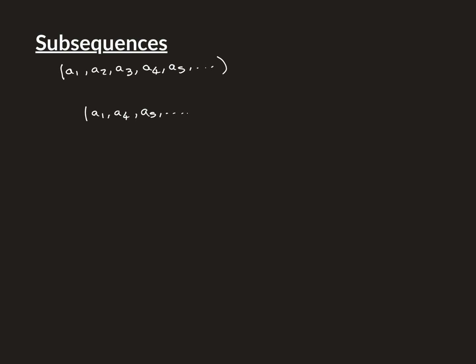An example of something that is NOT a subsequence is where you have reordered the terms of the sequence. So something like A3, A1, A5 is not a subsequence because you've swapped the order of A1 and A3. That's not allowed — the terms have to remain in the same order. All you're effectively doing is deciding which terms you want and which you don't.